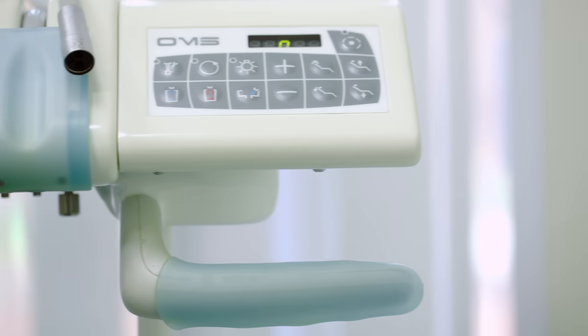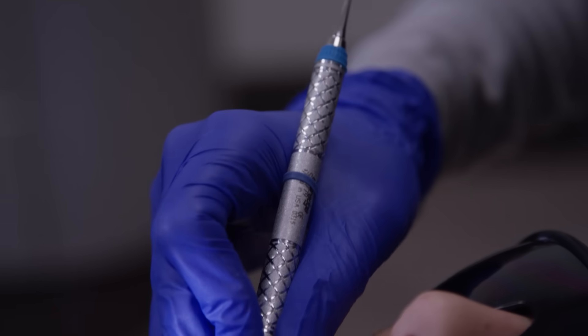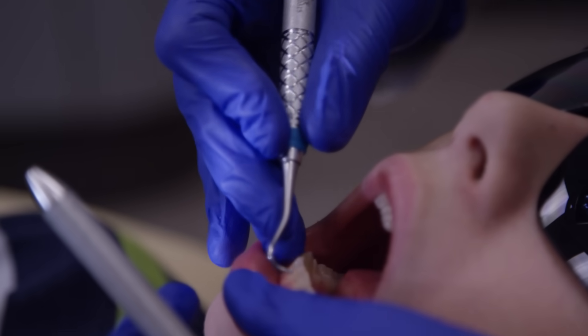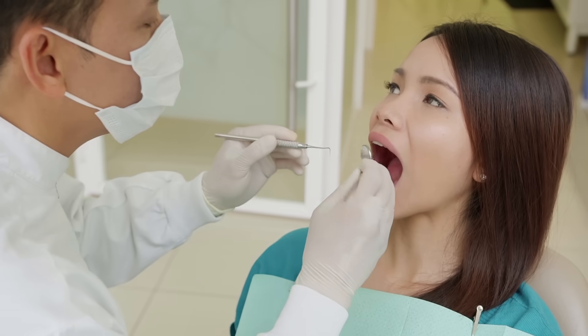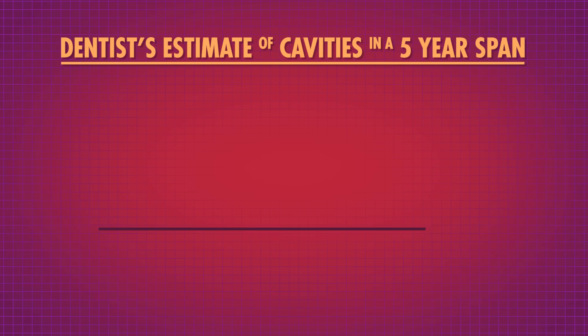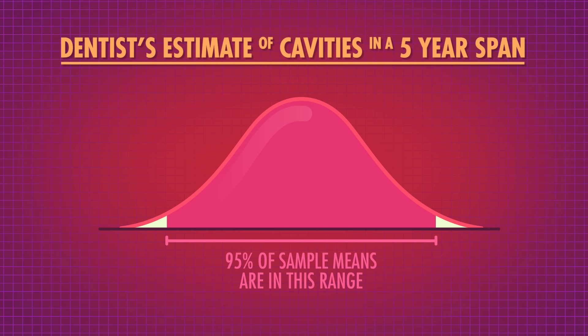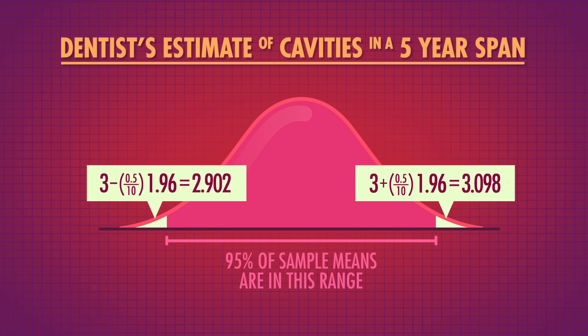For example, a dentist thinks the mean number of cavities the average person has in a 5-year span is greater than 1, and wants to calculate a 95% confidence interval to see if there's evidence that he's right. He rounds up a random sample of 100 patients from around the country and finds that this group has a mean of 3 cavities with a standard deviation of 0.5 cavities. The way we choose that confidence range is related to the distribution of sample means. The dentist can include a range of the most common 95% of the sample means expected from this estimate of the distribution of sample means. So now we have a 95% confidence interval from 2.902 to 3.098 cavities.